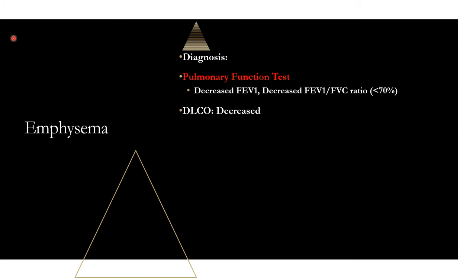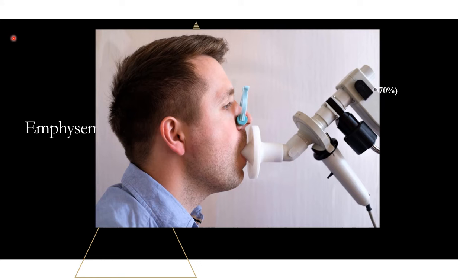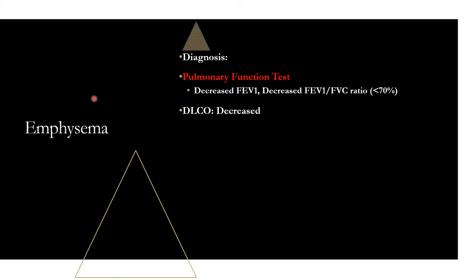What differentiates emphysema from chronic bronchitis is DLCO — the diffusing capacity of the lungs for carbon monoxide. DLCO will be low or decreased in emphysema because alveolar destruction decreases the gas exchange surface. It's going to be normal in chronic bronchitis where there's no alveolar destruction. So if you have a vignette with FEV1/FVC less than 70% and you don't know if it's chronic bronchitis or emphysema, look for the DLCO test — that'll help you differentiate.